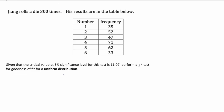Hello, this is Mr. Collier, and today we're doing a chi-squared test for goodness of fit for a uniform distribution, which means all the probabilities — or all the expected values — will be the same.